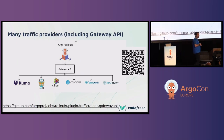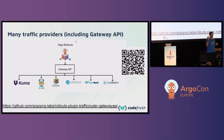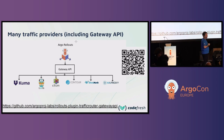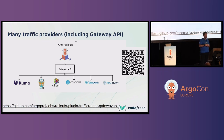ArgoRollouts has built-in support for several traffic providers, but until recently you had to request support for your provider — whether Nginx, HAProxy, or others. Now there is a plugin mechanism in ArgoRollouts. I'm involved in the gateway API plugin, which means you no longer need to wait for the project to add support. If your traffic provider supports the Kubernetes API Gateway, it will be automatically supported. So if you evaluated ArgoRollouts before and it didn't support your provider, you need to re-evaluate.